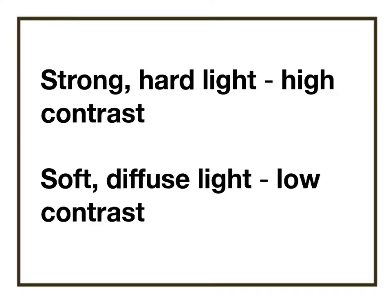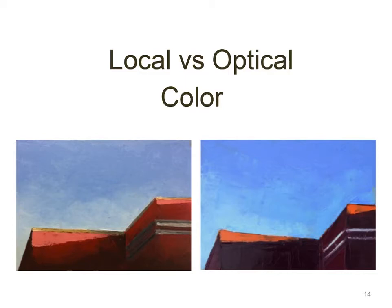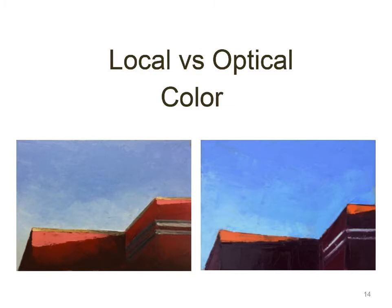So again, high contrast creates strong light and low contrast creates soft light, and we're going to look at how that translates using optical color. Local color is when you take the physical color of the object and only use black to darken it and white to lighten it. Many people rely on very limited tints and shades of a color to create a sense of light — when you do that, it will look washed out and chalky. Looking at the two paintings, the one on the right creates a much stronger, richer sense of illumination.